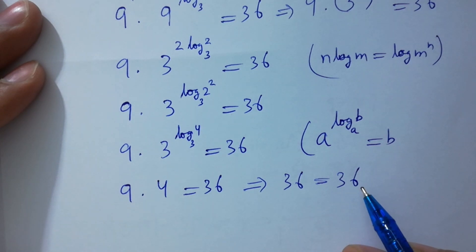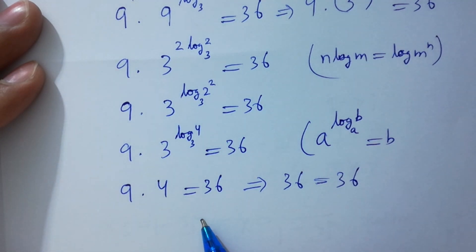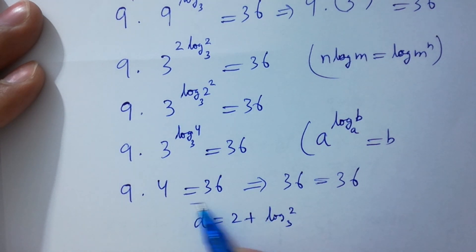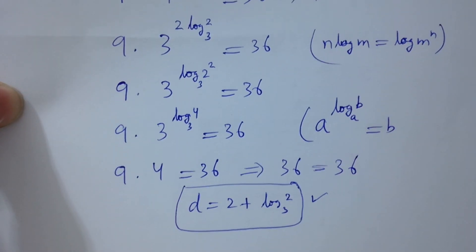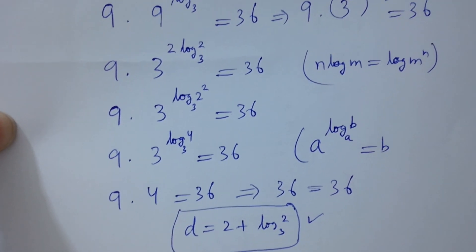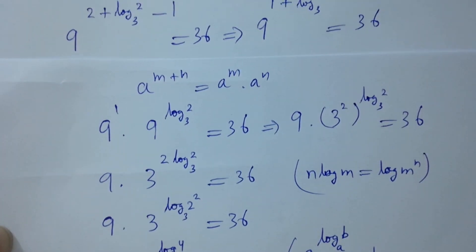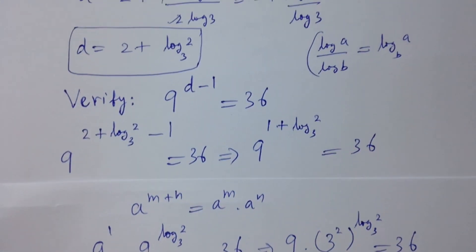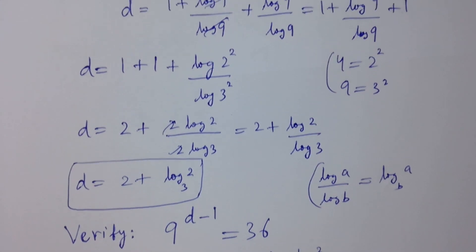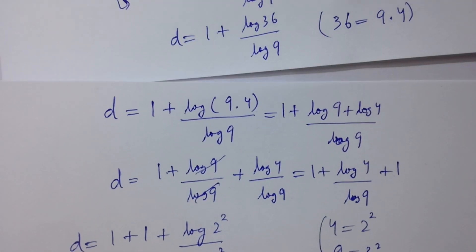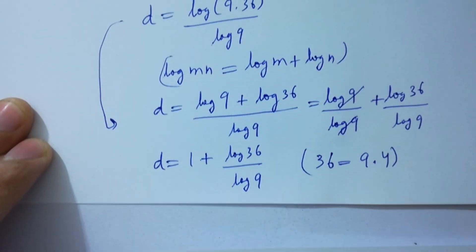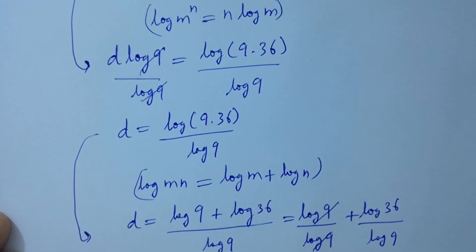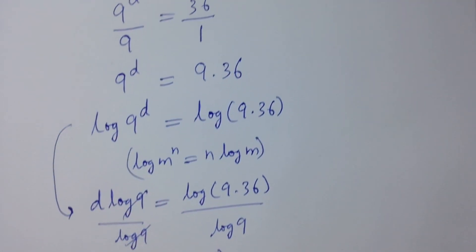Left hand side equals the right hand side. So the value of d equal to 2 plus log 2 to the base 3 satisfies the equation. Thanks for watching this video. Please subscribe to this channel to get notifications of new videos, share these videos with your classmates and friends, and visit the playlist to learn more. Okay, bye.